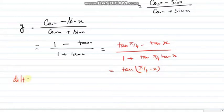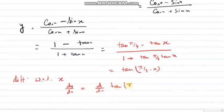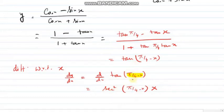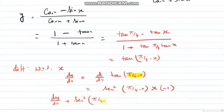Now if I differentiate with respect to x, dy/dx = d/dx of tan(π/4 minus x), which equals sec squared(π/4 minus x) times d/dx of (π/4 minus x). Since d/dx of π/4 is 0 and d/dx of (minus x) is minus 1, dy/dx equals minus sec squared(π/4 minus x). So dy/dx plus sec squared(π/4 minus x) equals 0, which is what we had to prove.